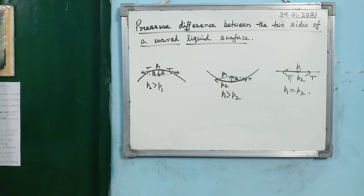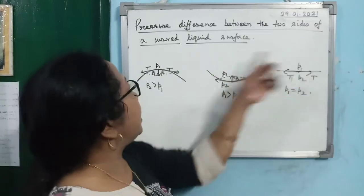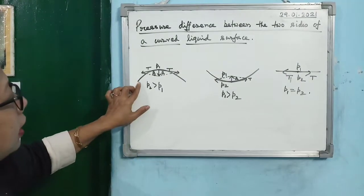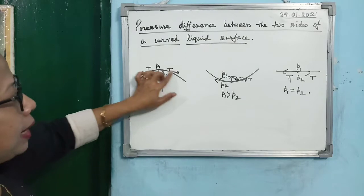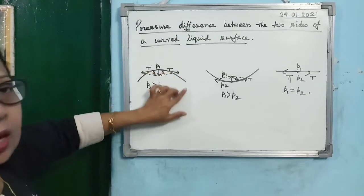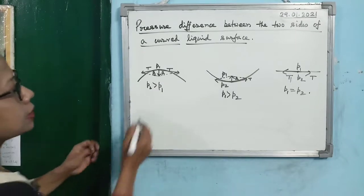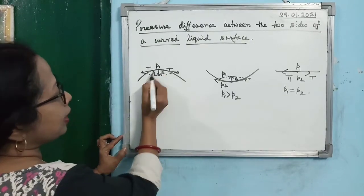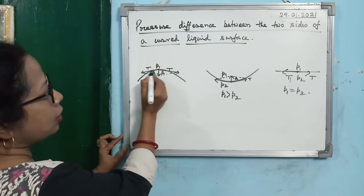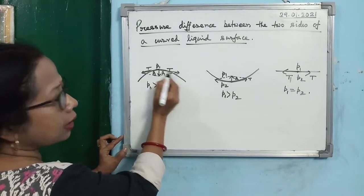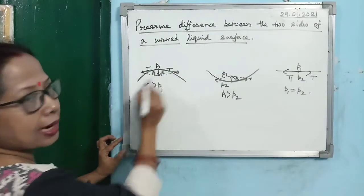Next is the concept of excess pressure, or pressure difference between the two sides of a curved liquid surface. Let us consider the liquid meniscus is convex — as in mercury-glass. If you consider a point here, then if you draw the tangent, along these two tangents the surface tension T is acting.